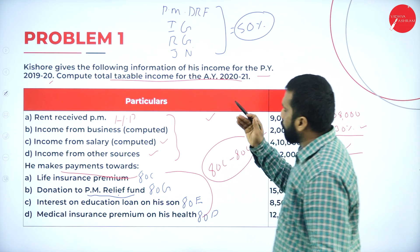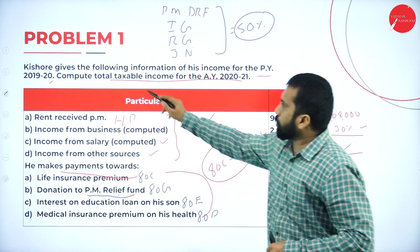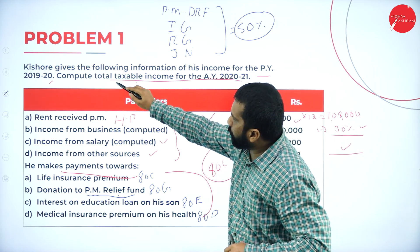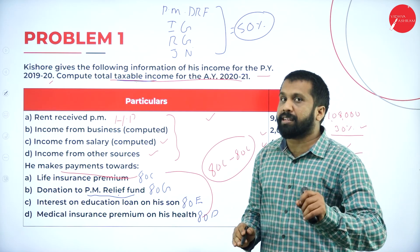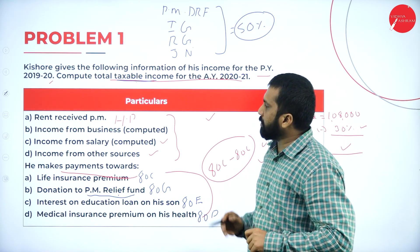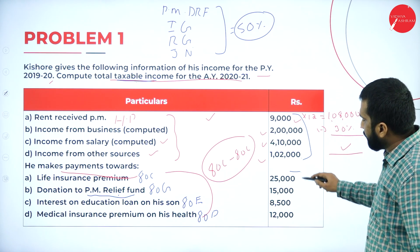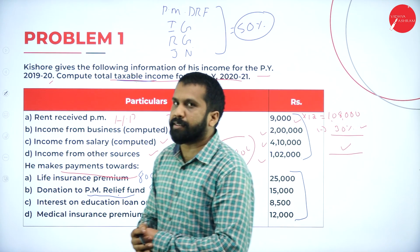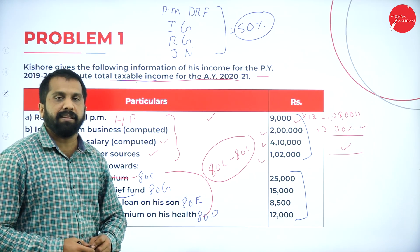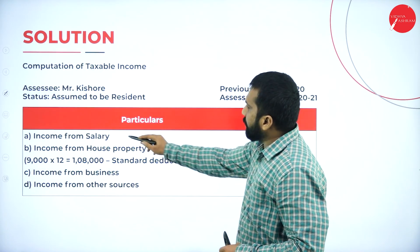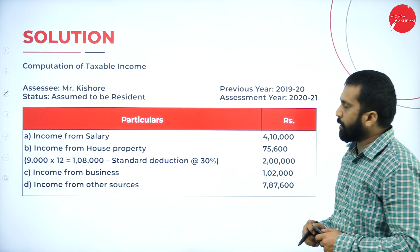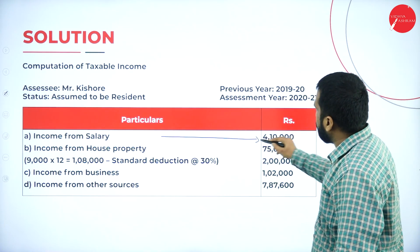Hope you understood the question. We are supposed to find out total taxable income — they have not asked us to prepare tax amount. Taxable income only, not tax. Add everything minus deductions — that is your taxable income. Income from salary is 4,10,000. Income from business is 2,10,000.